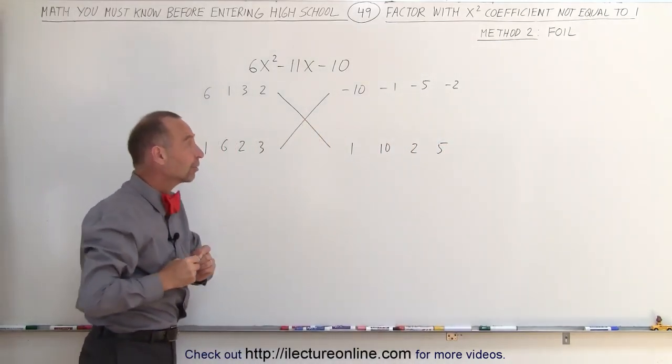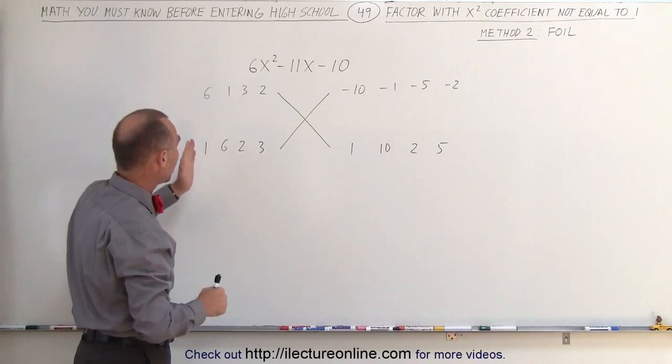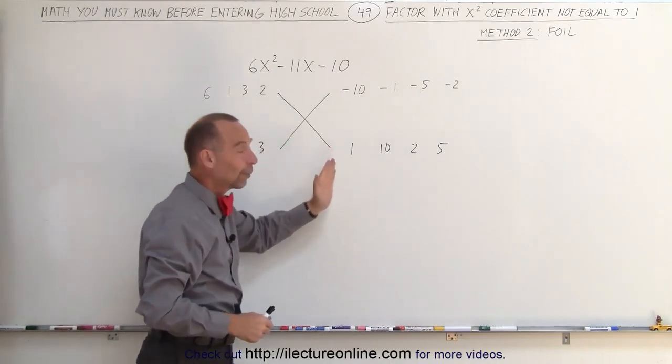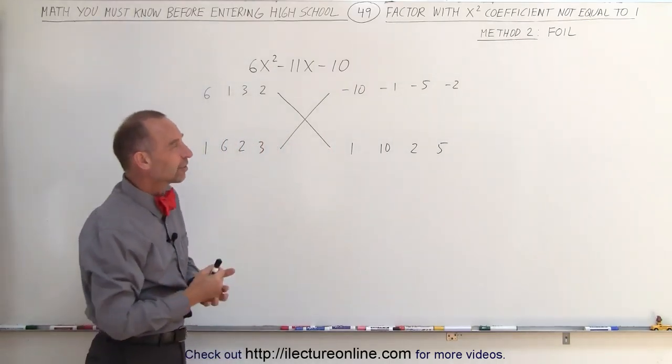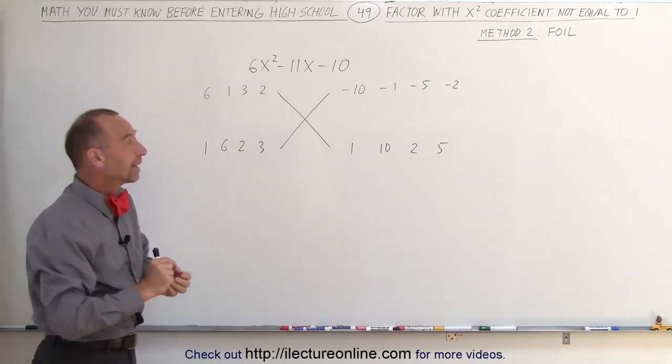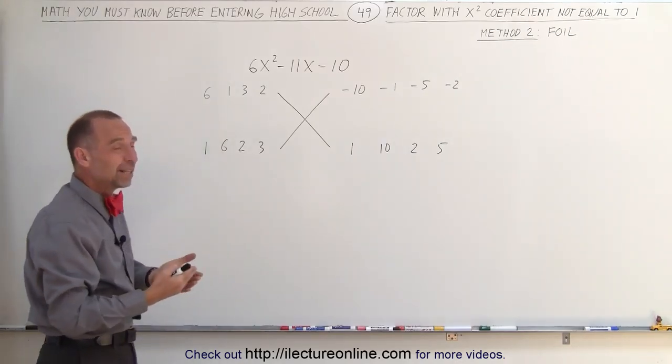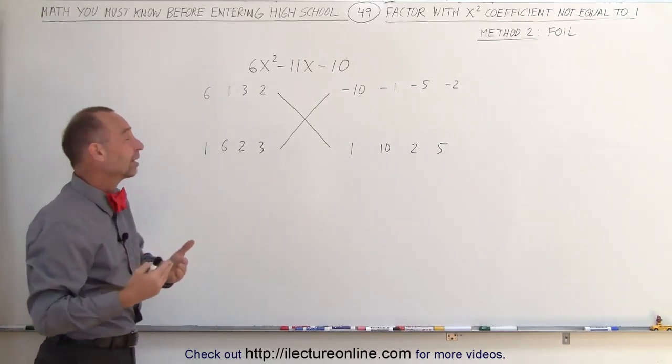Now we're going to look at all the possible combinations. Since there's 4 on the left side and 4 on the right side, there's a total of 16 different combinations. But it's not quite that bad because in some cases we can immediately see that the solution is not present.